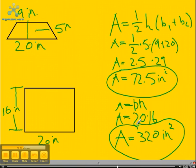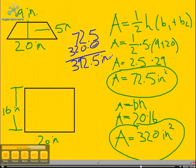Now we have to add these two areas together. Once we do that, we come up with 392.5. Which means that the total area of the figure is 392.5 inches squared.